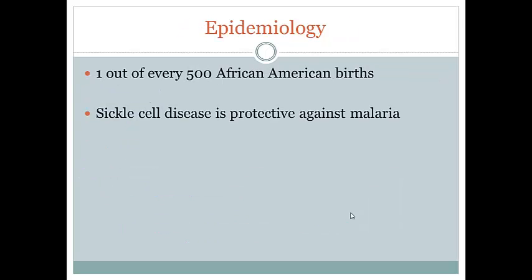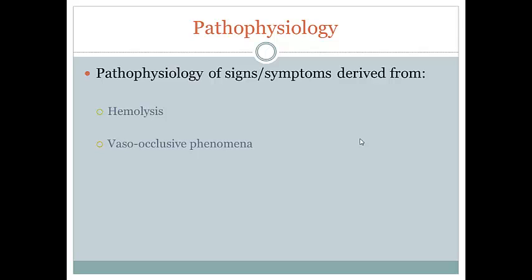We should briefly discuss the epidemiology of this disease and who it affects. One out of every 500 African-American births has both beta chains mutated and are born with sickle cell disease — a huge disease burden on this population. It's thought that one reason they have such a high disease burden is that sickle cell anemia is actually protective against malaria. Malaria is a protozoan that infects humans, and part of its life cycle involves replicating in red blood cells. So instead of having those nice biconcave discs to replicate in, if it has to replicate in these sickled cells that are more fragile, it's not going to be the ideal environment. Now let's talk about the pathophysiology — one of the most exciting parts of this disease — because all the signs and symptoms in part two can really be derived from two pathophysiologic processes: hemolysis and vaso-occlusive phenomenon.